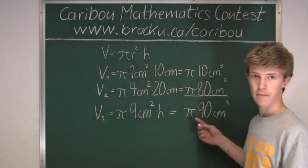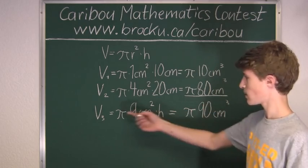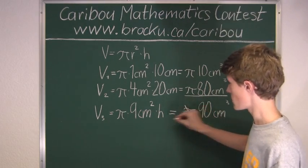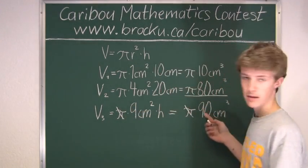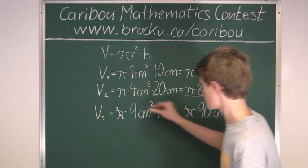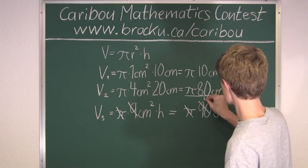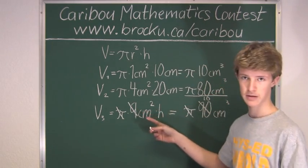Now we need to solve for h. We know that a common factor with both is pi, so we divide both by pi. Then we can divide both sides by 9. This leaves 10 on one side and 1 on the other. We will divide both sides by centimeters squared.